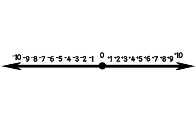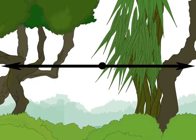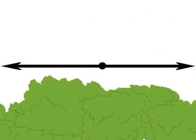Notice that a number line has an arrow on each end. That means the numbers go on and on, all the way to infinity, in both directions.